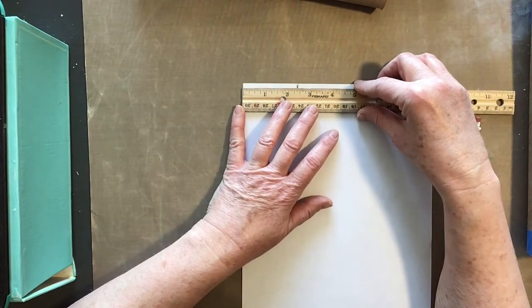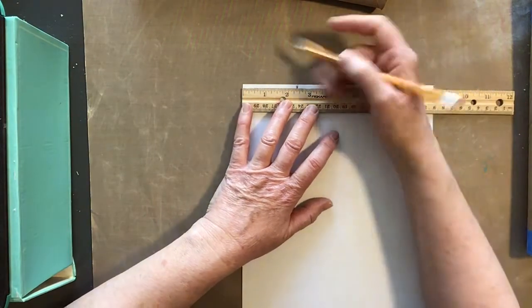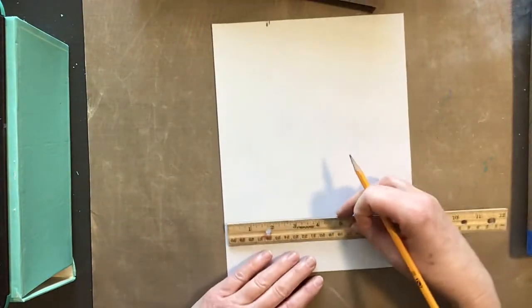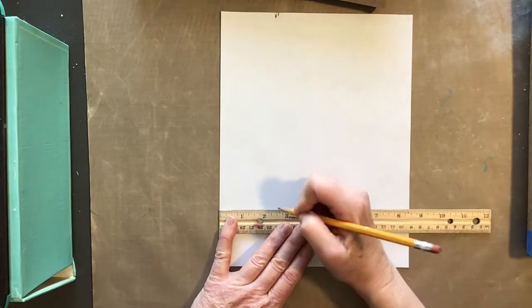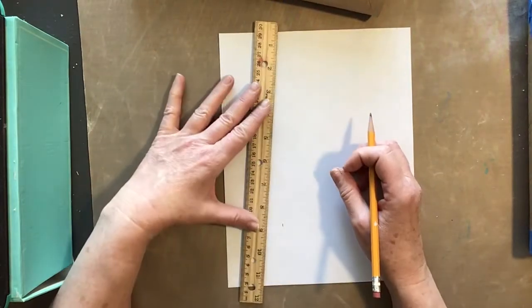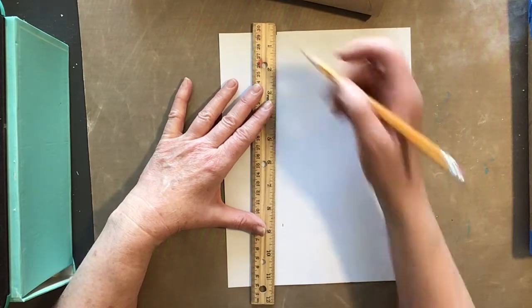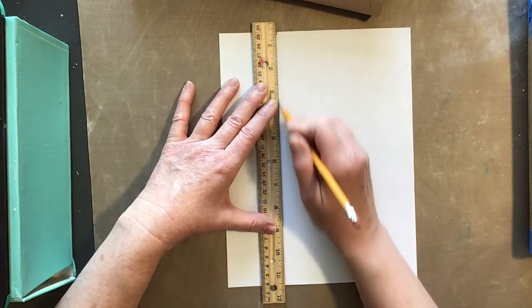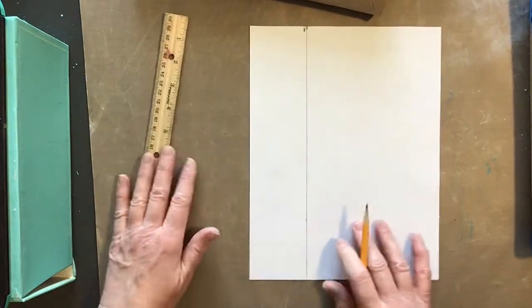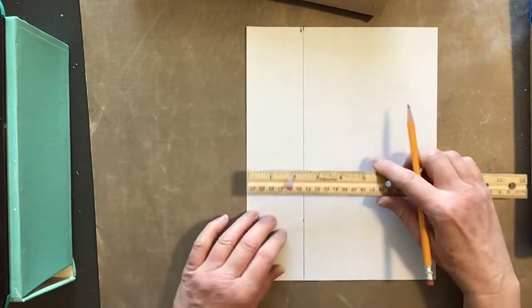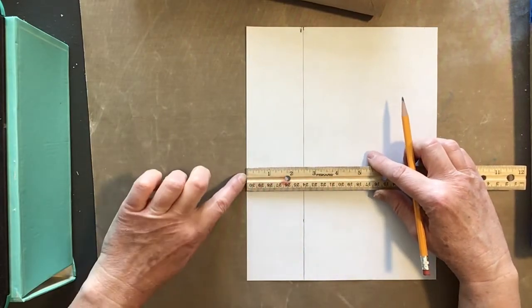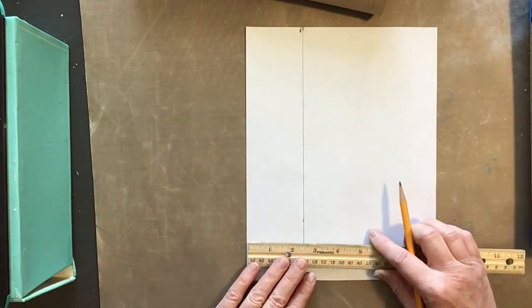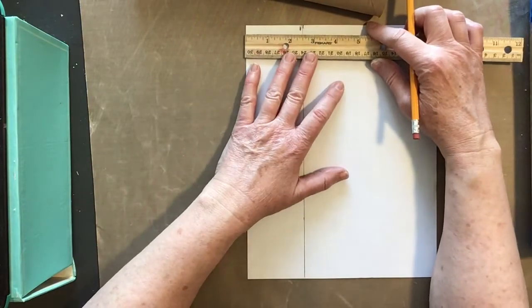I'm just going to make a mark right there. And down here, two and a half inches. Then I line my ruler with the top notch and the bottom notch so I know that I make the line parallel to the edge of the paper. When you're measuring, you always have to line up the edge of the ruler with the edge of the paper so that you get an equal measurement at the bottom and at the top.